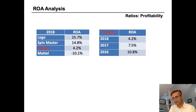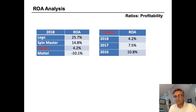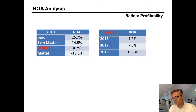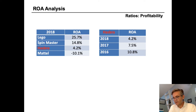In general, we like to see return on assets higher rather than lower, and they should be positive for a healthy company. If you see a return on assets over 15%, that's generally considered quite good. In fact, less than 15% of S&P 500 companies are currently achieving a return on assets better than 15%, but it does vary quite significantly by industry.